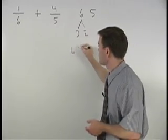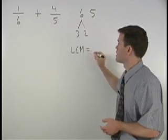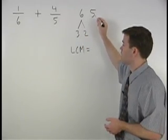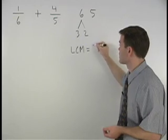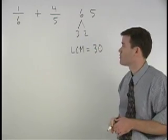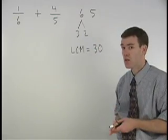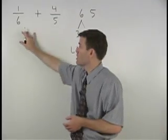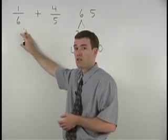So our least common multiple, or LCM, is simply three times two times five, or six times five, which is 30. So our least common denominator for these two fractions is 30.